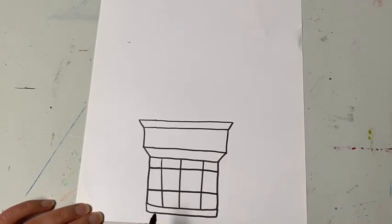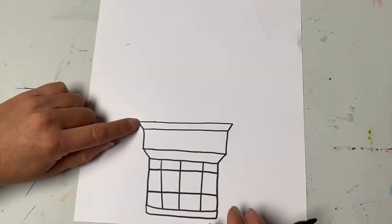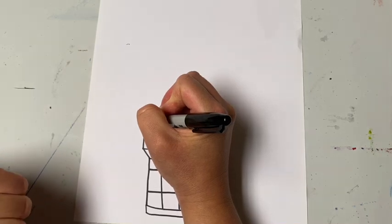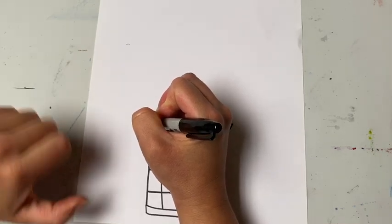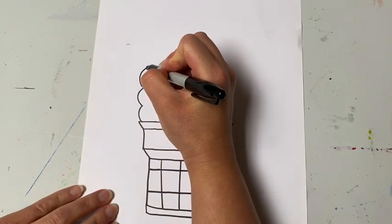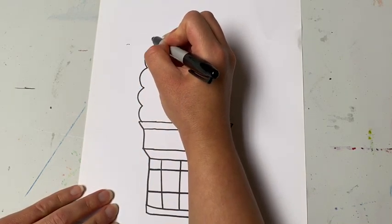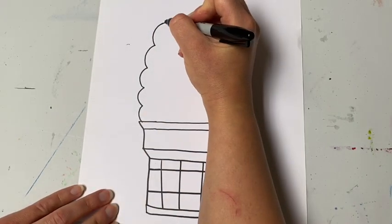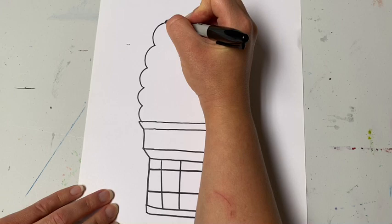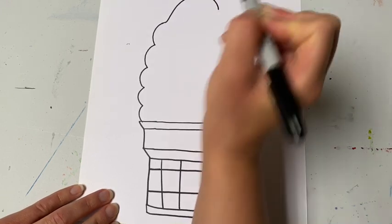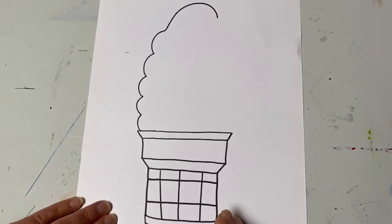Now that I have the cone, I can put the ice cream inside. So I'm going to go back to the top edge of my cone, and I'm going to start by making a bumpy line. It's a wavy line, but a little more curvy. So I'm going to make as many curves as I want my ice cream to be. You can make it as tall as you want it. Once I get to the top, I'm going to put my pencil right at the end, and I'm going to make a last curve that bends over a little bit for the top of the ice cream.